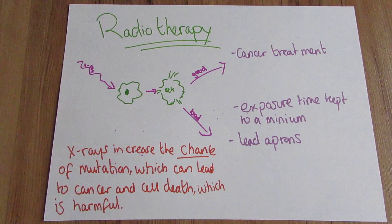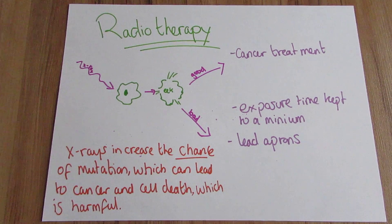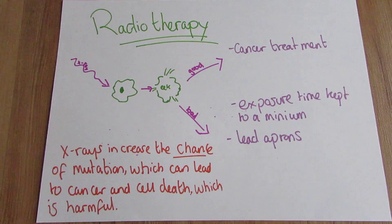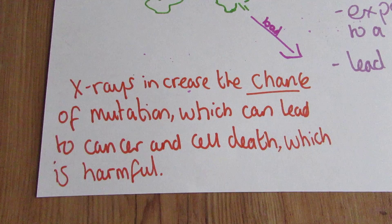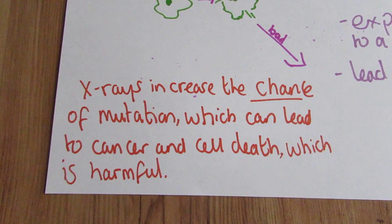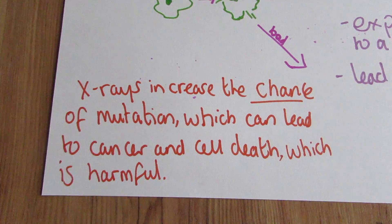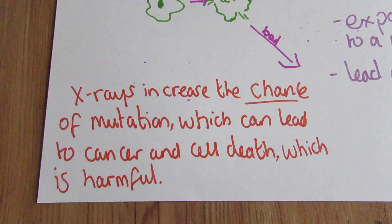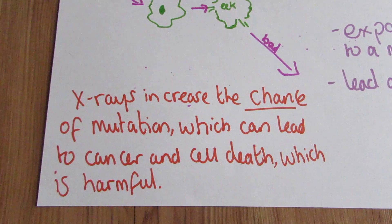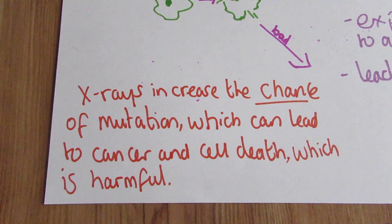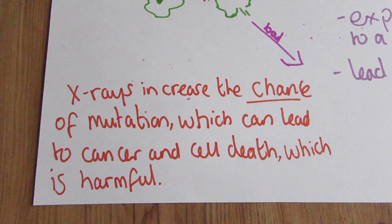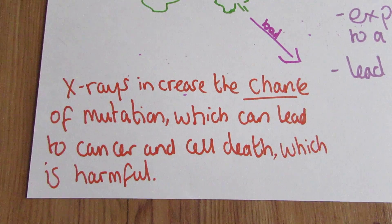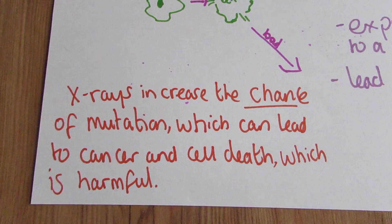In P3, the examiners are really going to pick up on your language. Whereas in P1 you would have got the marks by saying x-rays cause mutations, in P3 we have to be really careful with what you write down. X-rays increase the chance of a mutation, which can lead to cancer and cell death, which is harmful. You also have to include the word 'chance', otherwise you won't be able to get full marks on this question.